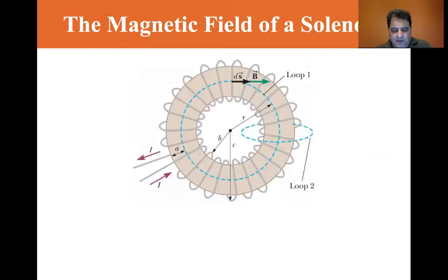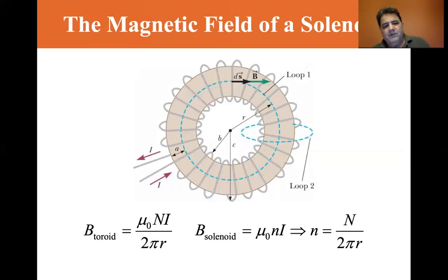For a toroid it's very similar. You just kind of take a solenoid and you kind of wrap it around itself. For small sections of the toroid, it'll appear somewhat like a solenoid. So for a toroid, B equals mu sub zero times N I, the number of turns times I divided by two pi R, the circumference of the toroid. B for a solenoid is mu zero N I, so N is equal to big N divided by two pi R.